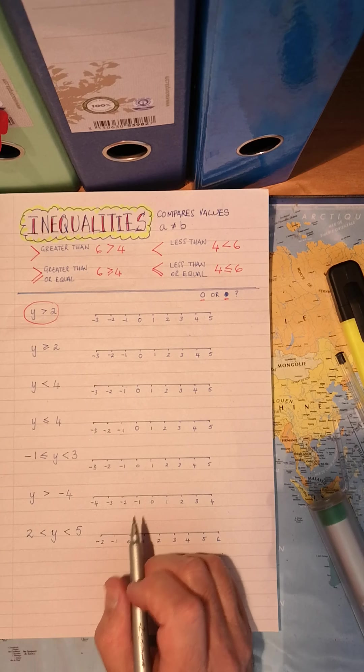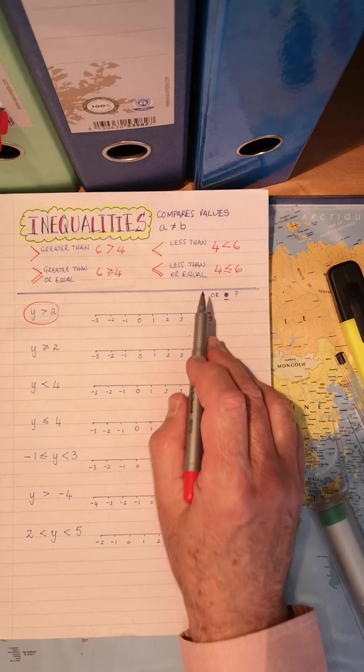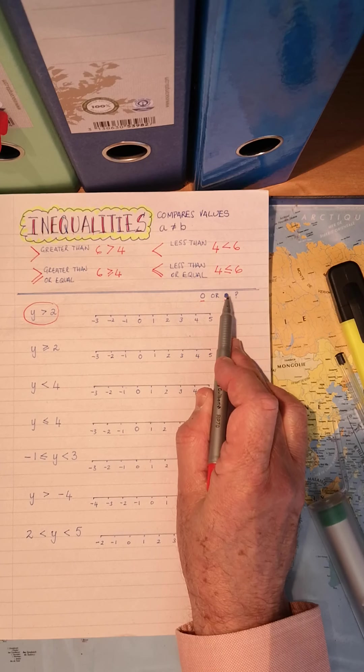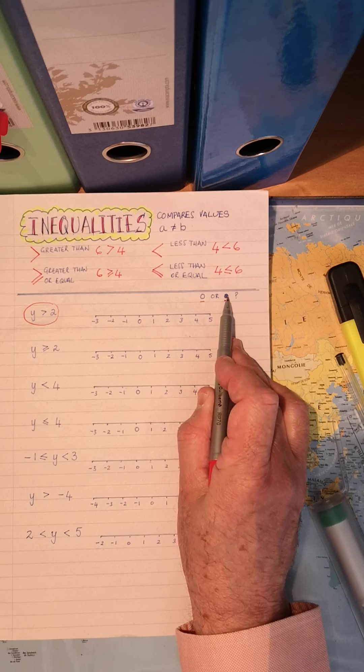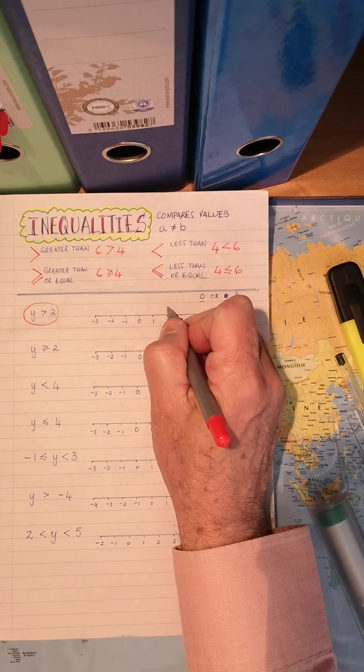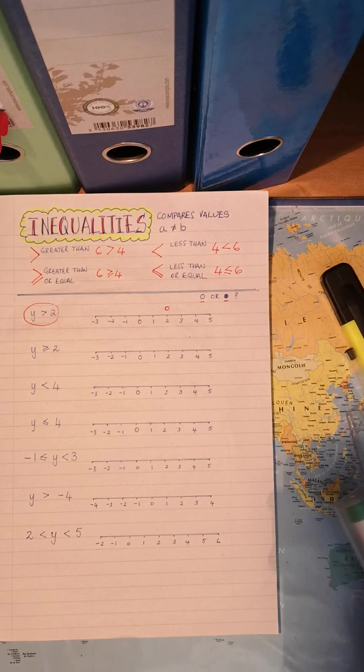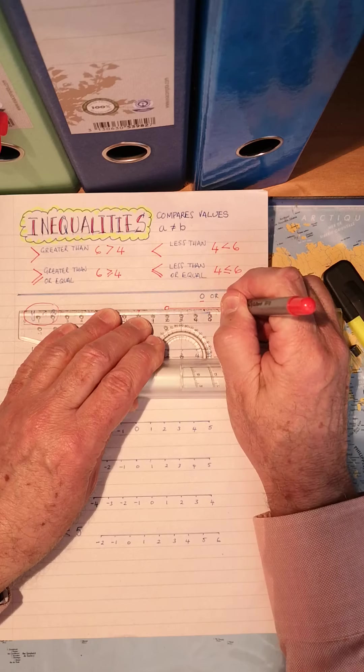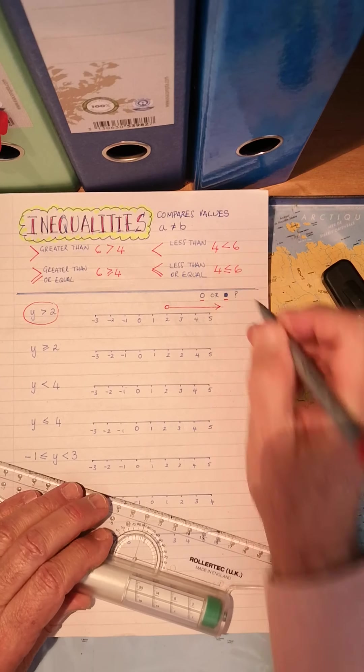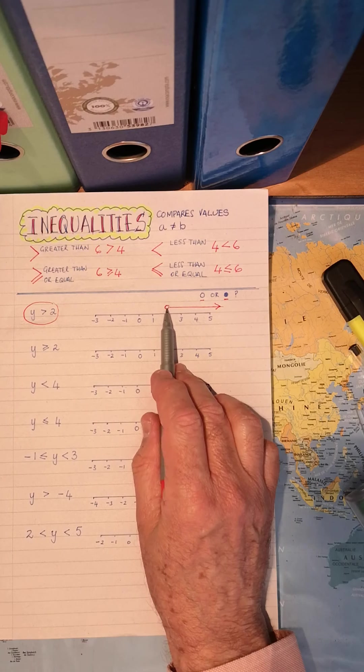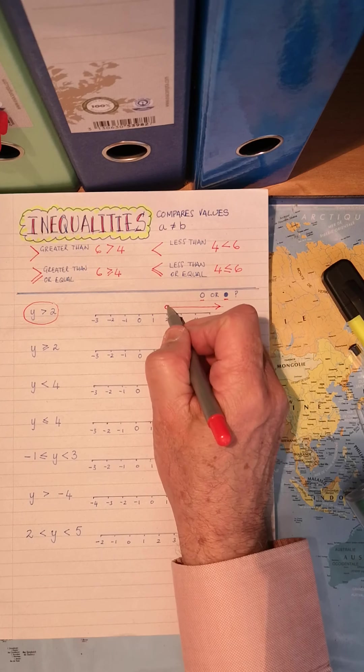Y is bigger than two. Okay. So do you think it's going to be an open circle or a closed circle? Does it include two? No, it doesn't. So it's going to be an open circle. So let's find two. So the values of Y will be bigger than two. Okay. So anywhere along that number line going that way. Okay. Open little circle. Right. Remember that.